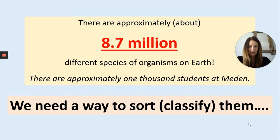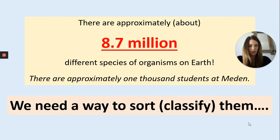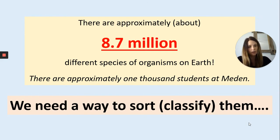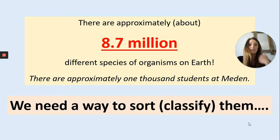There are approximately 8.7 million different species of organisms on Earth. To put that into perspective, there's roughly just under 1,000 students at Meaden, so 8.7 million different species — and however many organisms are in each species — is a very, very big number. Scientists need a way to sort or classify these species and put them into groups. It's a bit like the supermarket: all the milk is together, not on the same aisle as the bread, so things are grouped to make it easier to understand how they work and so scientists can investigate new species.